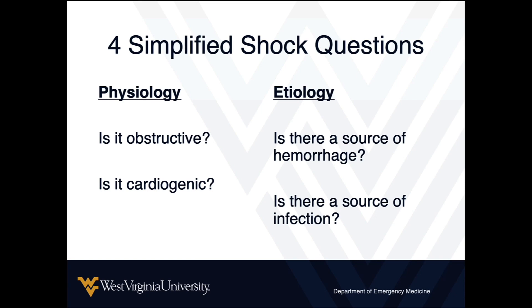By answering those two physiologic questions, your management steps for the other etiologies are largely laid out. For specific etiologies, the next question is: is there a source of hemorrhage? Most of the time we think of hemorrhage in trauma, but there are atraumatic causes — especially now that many patients are on apixaban. If you miss a spontaneous bleeding aneurysm in the abdomen or a spontaneous splenic rupture, that diagnostic error and delay may lead to mortality or significant morbidity.